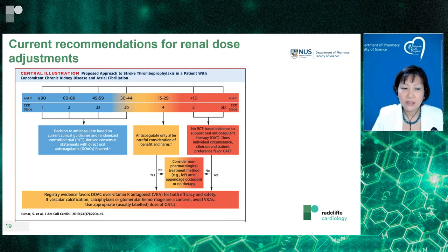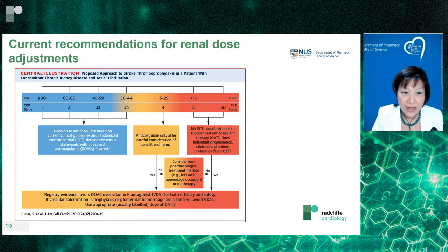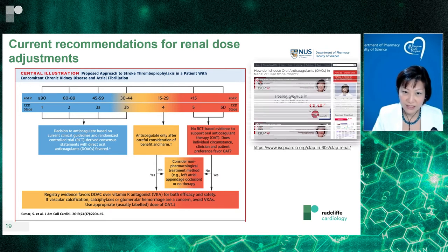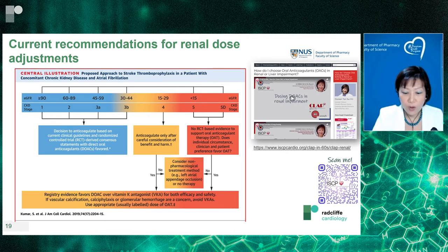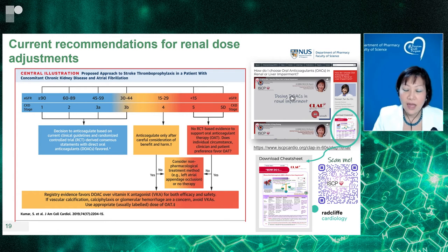According to the JACC 2019 reference, regarding the renal function spectrum for DOAC use in AF: anyone with a creatinine clearance below 50 should consider dose adjustment; below 30, patients were excluded from trials, though recommendations are based on PK studies; dialysis patients have separate apixaban recommendations from the US guidelines based on PK data. A cheat sheet is available on the ISCP website via QR code, covering dosage adjustments with respect to renal function.